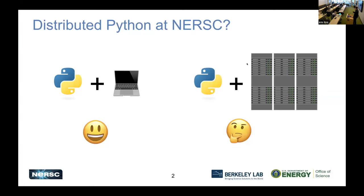So this is a picture of what I just said. A lot of you probably already know how to use Python, write Python code, and do some science you could do today on your laptop. But when you want to take advantage of NERSC or other HPC systems, how do you use Python to really take advantage of the scale of these systems?